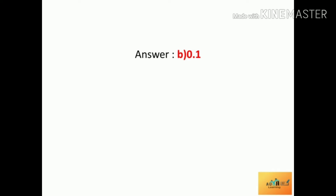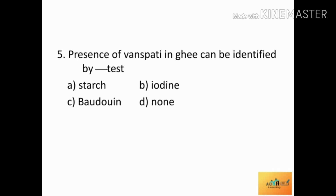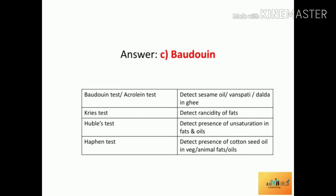Fifth question: The presence of vanaspati in ghee can be identified by which test? Option A: starch, Option B: iodine, Option C: Baudouin, Option D: none. The correct answer is the Baudouin test, also known as the acrolein test, used to detect sesame oil, vanaspati, or dalda in ghee. Kreis test is used to detect rancidity of fats. Hübl's test is used to detect the presence of unsaturation in fats and oils.